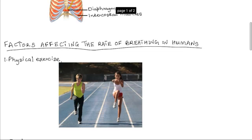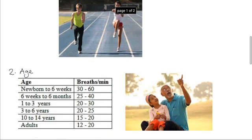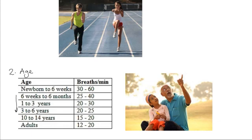Another factor that affects the rate of breathing is age. Young people generally breathe faster than older people. As summarized in this table, as age increases, the rate of breathing decreases — that is, the number of breaths taken per minute decreases. It is highest in newborns and decreases as one gets older.